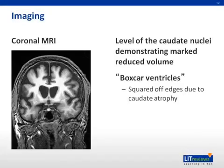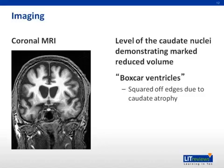Other findings that can help in diagnosis include imaging. MRI and CT evaluation in patients with moderate to severe Huntington's show loss of striatal volume and increased size of the frontal horns of the lateral ventricles. In this image, atrophy of the caudate leads to the appearance of the classic boxcar ventricles. It is important to note that scans are usually unhelpful for diagnosis of early disease.